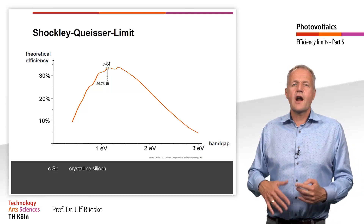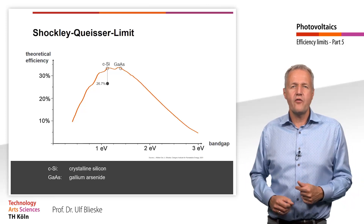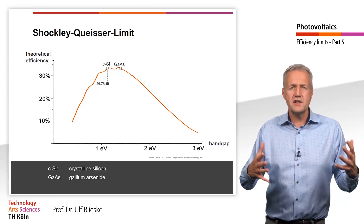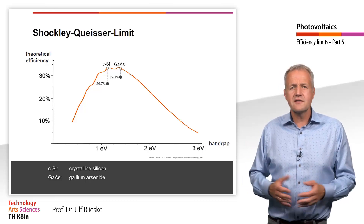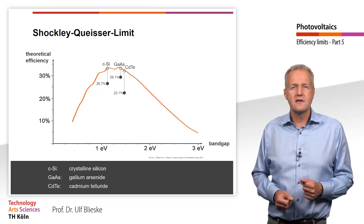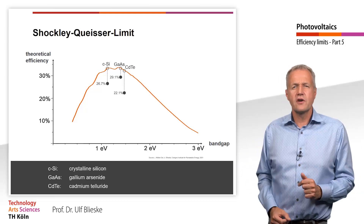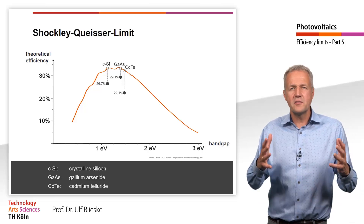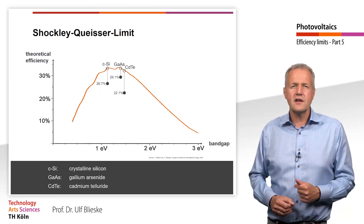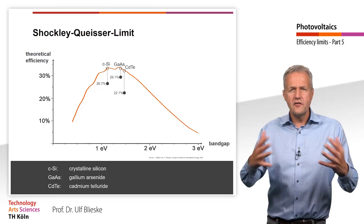Besides silicon, there are a number of other important materials for photovoltaics. For example, gallium arsenide, with a band gap of 1.42 eV. Real gallium arsenide solar cells have reached efficiencies of even 28 to 29%. Another material is cadmium telluride, with a band gap of 1.45 eV and a record efficiency of 22.1%. These materials differ from crystalline silicon in one key aspect: they absorb light much more strongly. As a result, solar cells made of these materials can be much thinner — a thickness of 1 to 2 µm is sufficient, while silicon solar cells are usually 150 to 200 µm thick. This field is therefore also known as thin film photovoltaics.